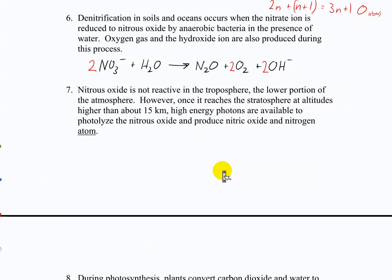One more, and we'll leave the rest for homework. Nitrous oxide is not reactive in the troposphere. However, once it reaches the stratosphere, high-energy photons are available to photolyze the nitrous oxide and produce nitric oxide and hydrogen atom. So what's going on here? So is that balanced? Yep.